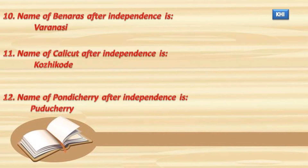11. The name of Calicut after independence is Kozhikode. 12. The name of Pondicherry after independence is Puducherry.